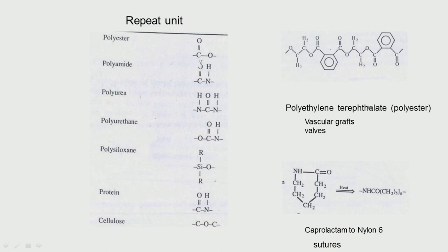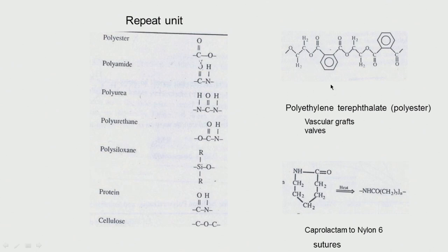For example, look at polyethylene terephthalate — it is a polyester, originally invented for making fabrics. It has a terephthalic acid unit and ethylene glycol, condensed as repeat units. It is called polyester, also called Dacron. It is used in manufacturing large diameter vascular grafts (~2 mm), valves, patches, and many other applications. The ester bond can be degraded by esterase-type enzymes.